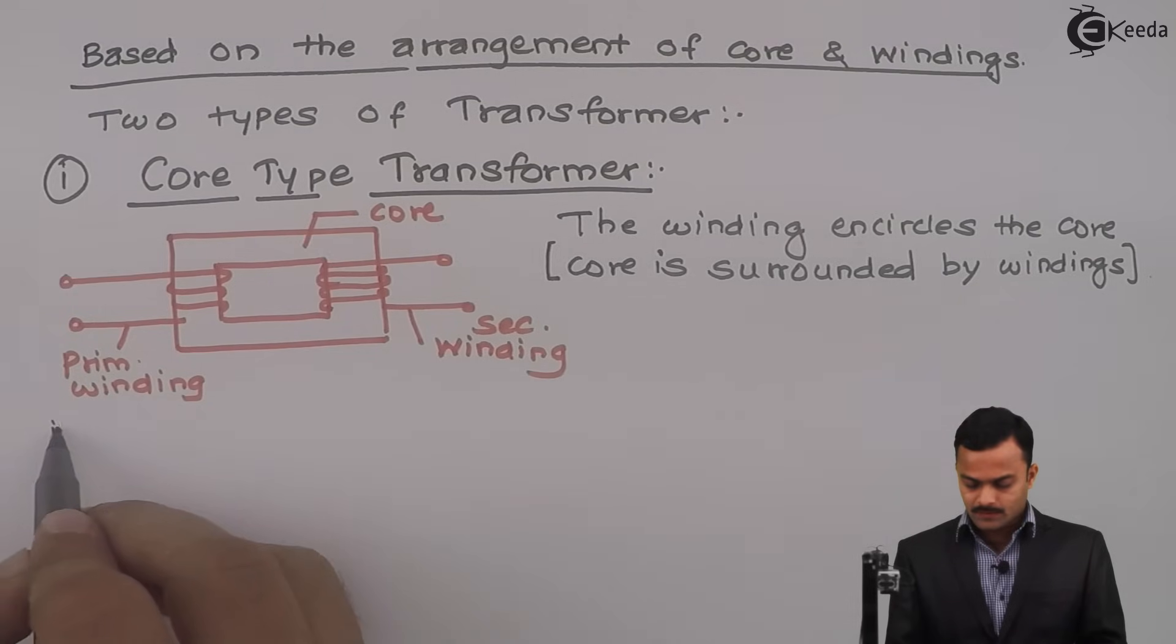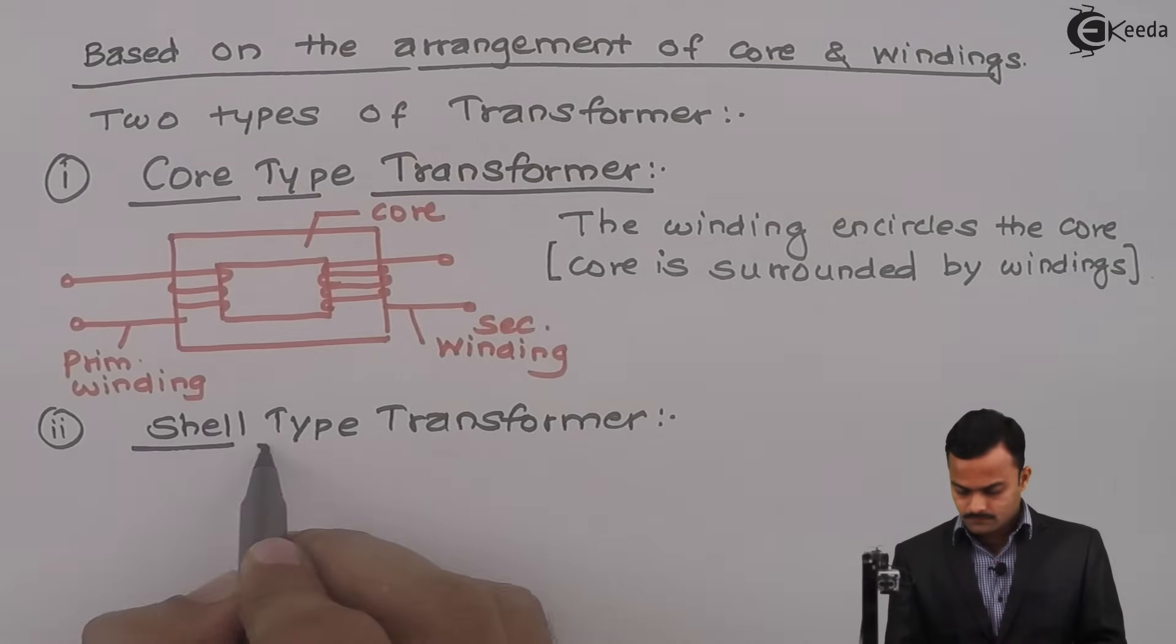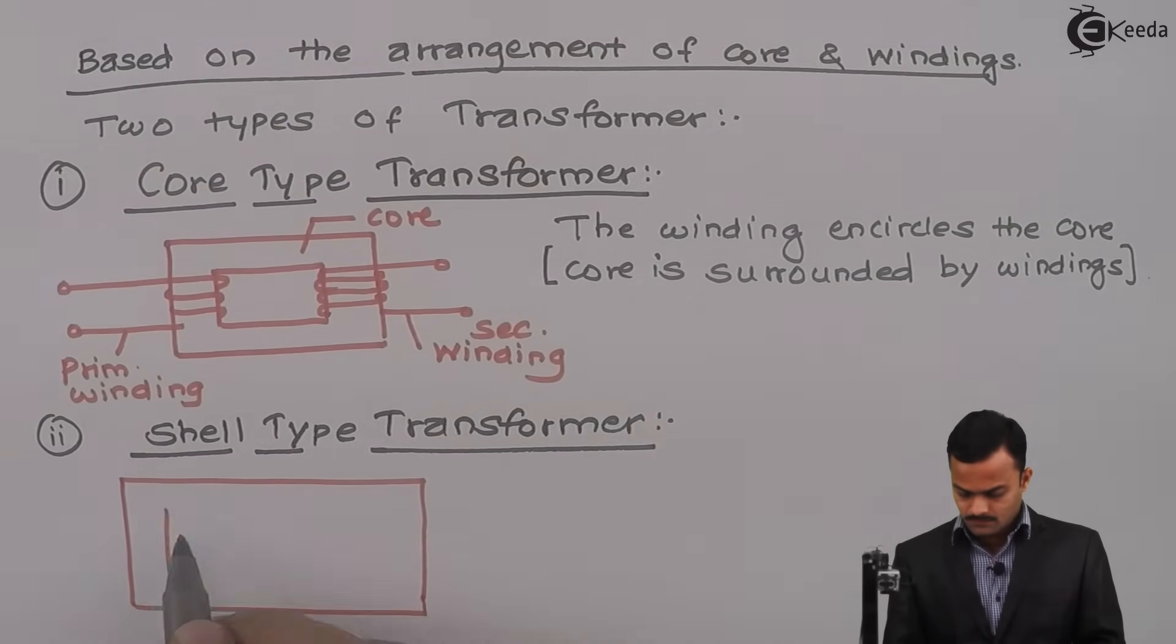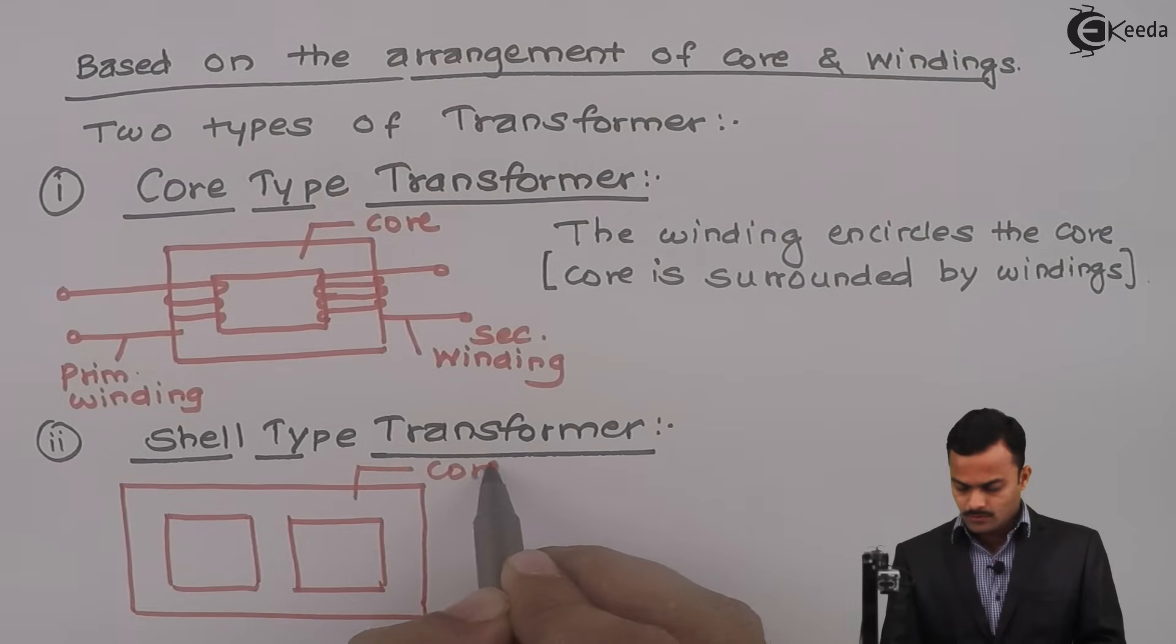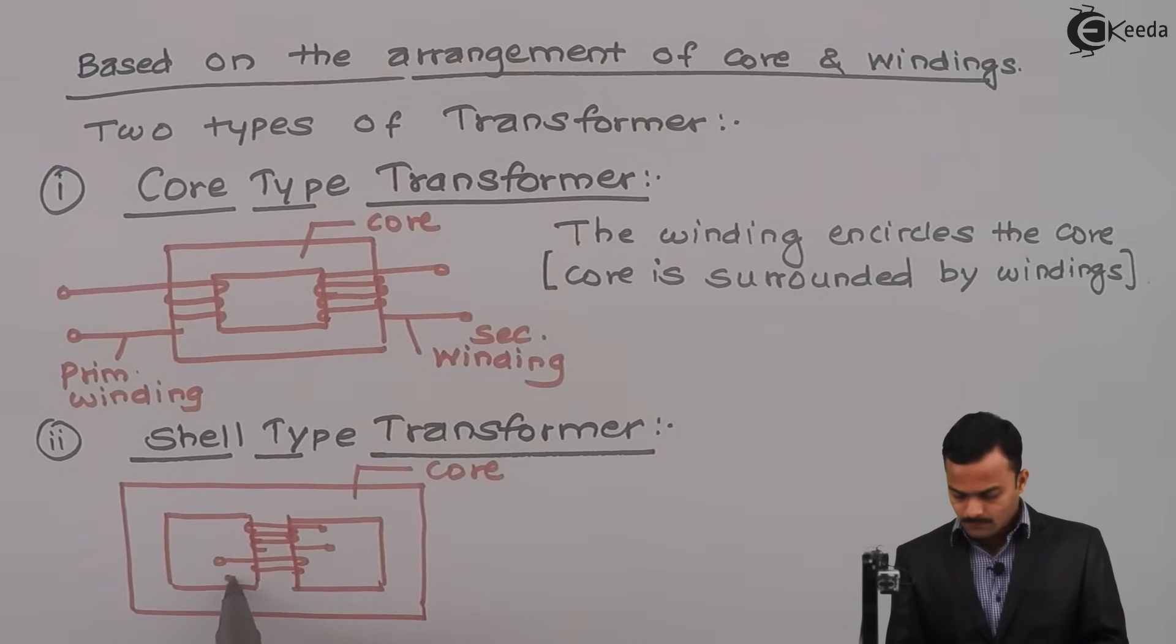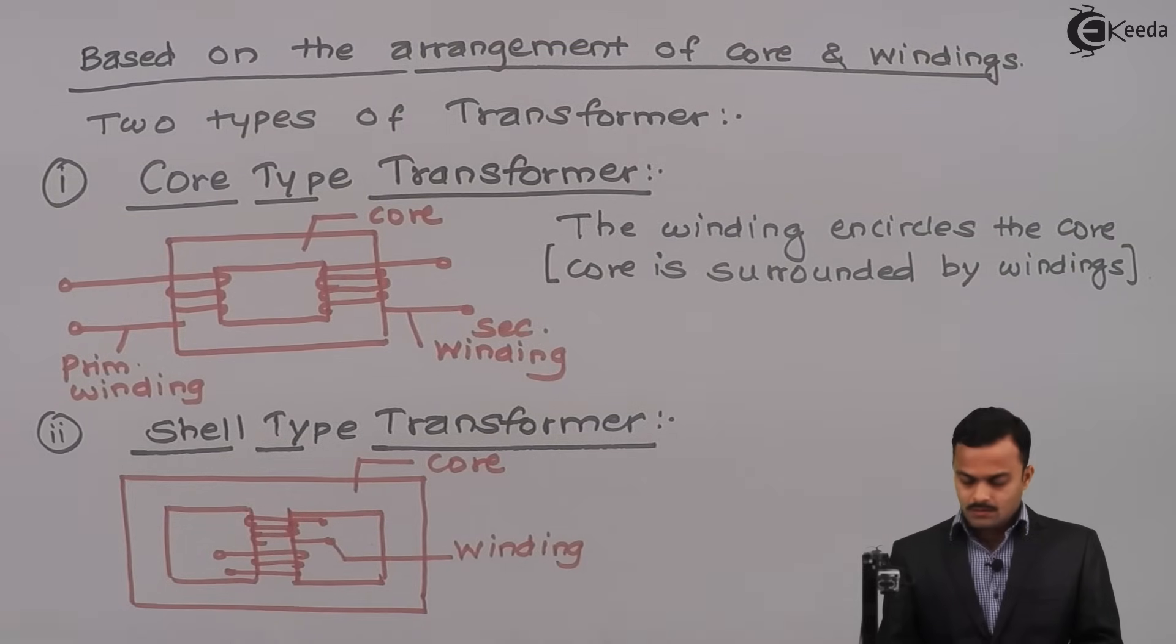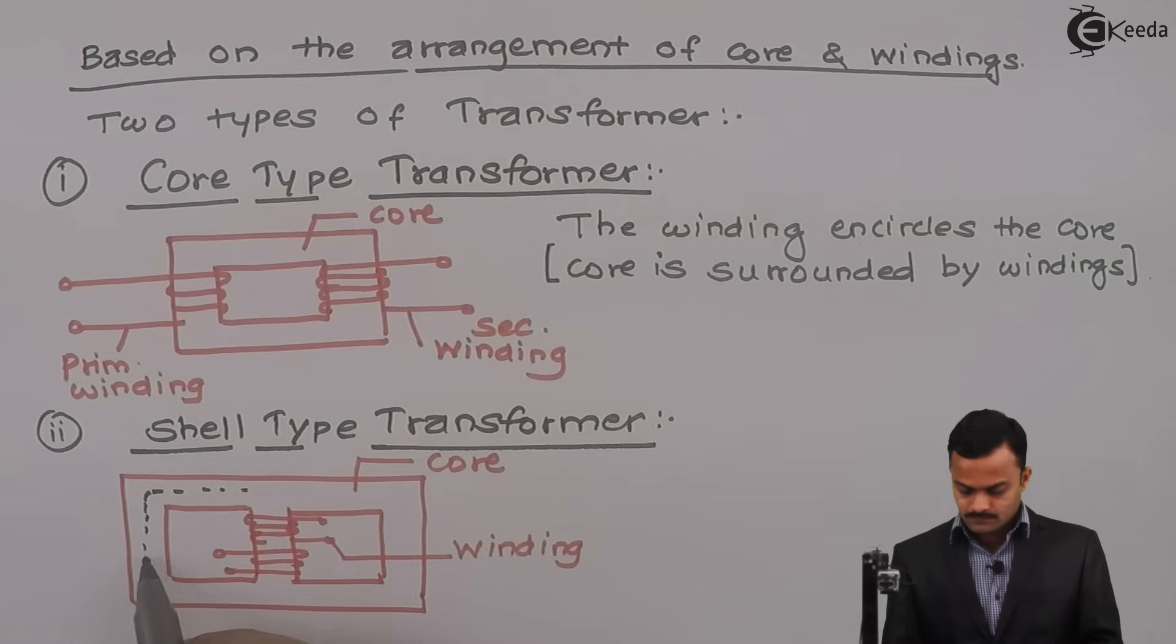Let's see another type of transformer, that is shell type. So this is core and we have windings like this. So what happened? Here, we are having two magnetic circuits. This is a first magnetic circuit and this is second magnetic circuit.